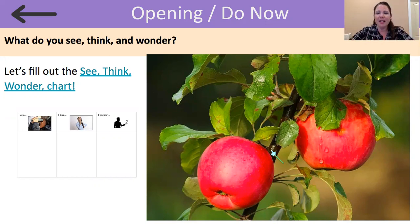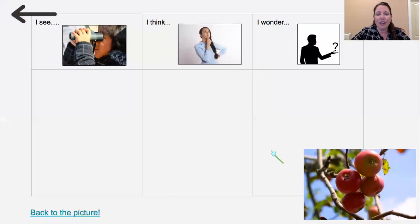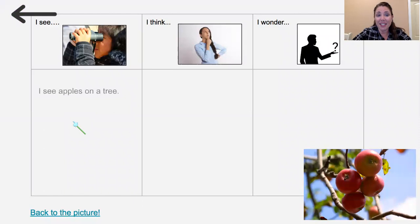Okay, so let's take a minute and think about those things that we are seeing, thinking, and wondering. So let's share some of those things that we see. What do you see when you looked at this photograph? When I looked at the photograph, I see apples on a tree.